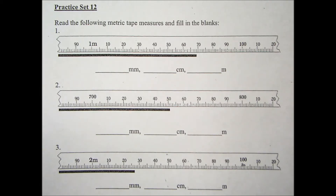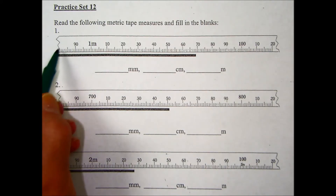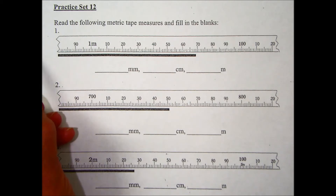Practice set 12. Read the following metric tape measures and fill in the blanks. On a metric ruler, the smallest division is usually 1 millimeter. In this first ruler, we have a break, so we're not seeing the beginning of this ruler.